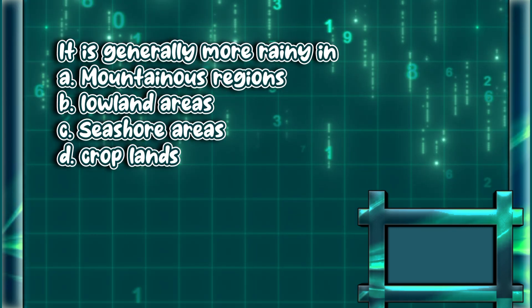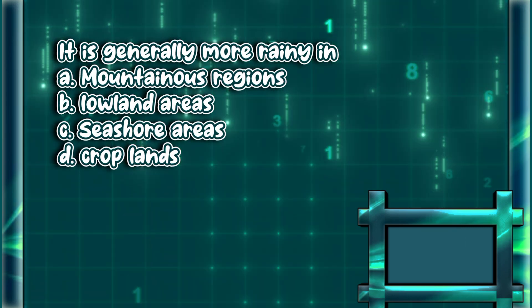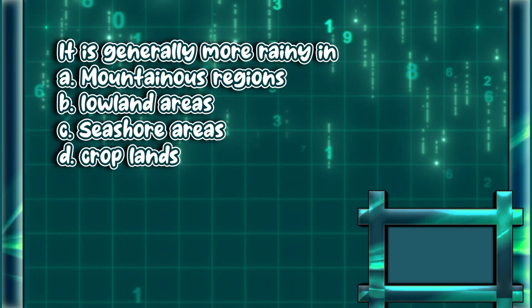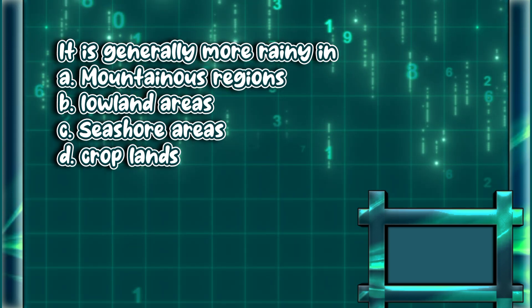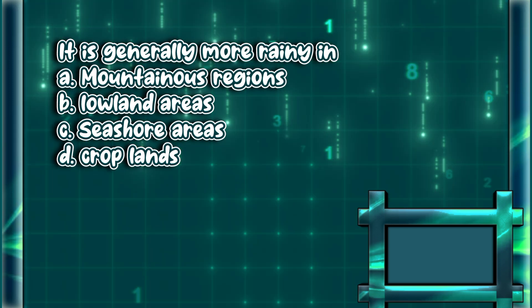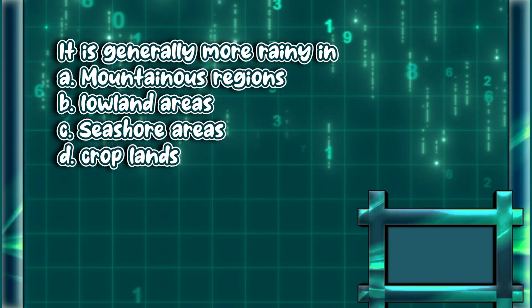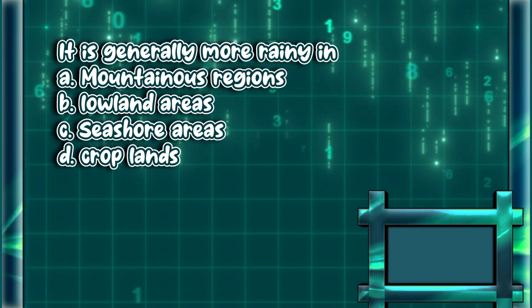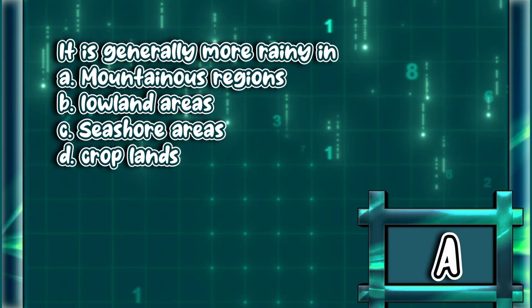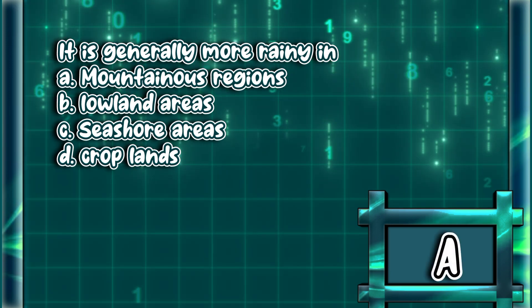It is generally more rainy in. A. Mountainous regions. B. Lowland areas. C. Seashore areas. D. Crop lands. The answer is letter A.